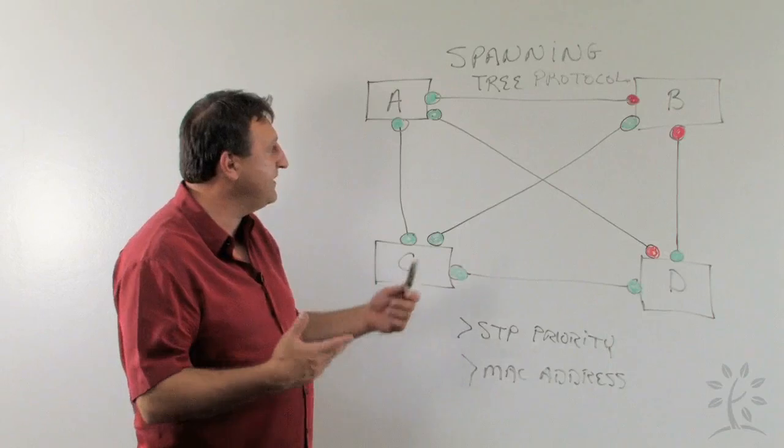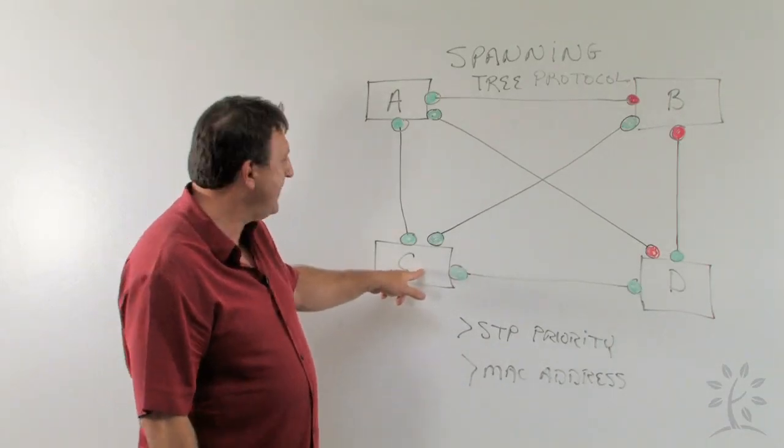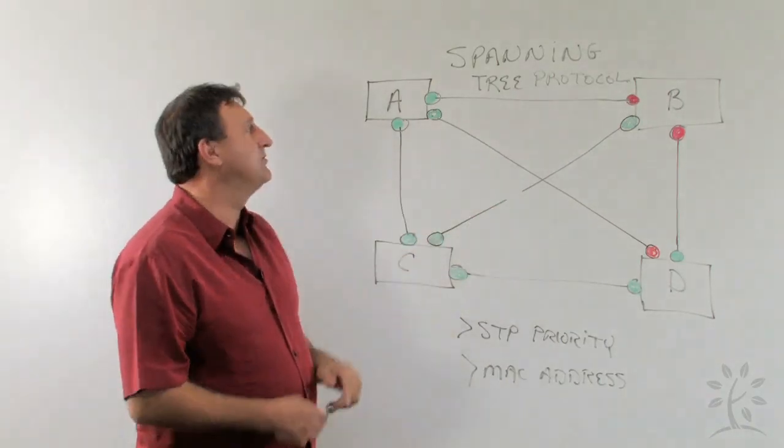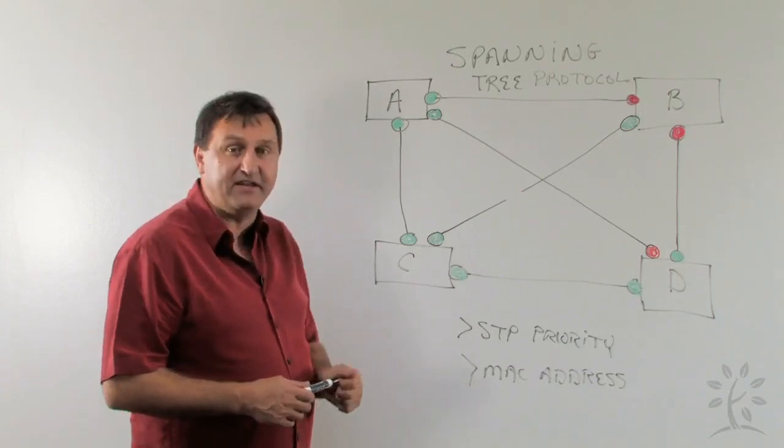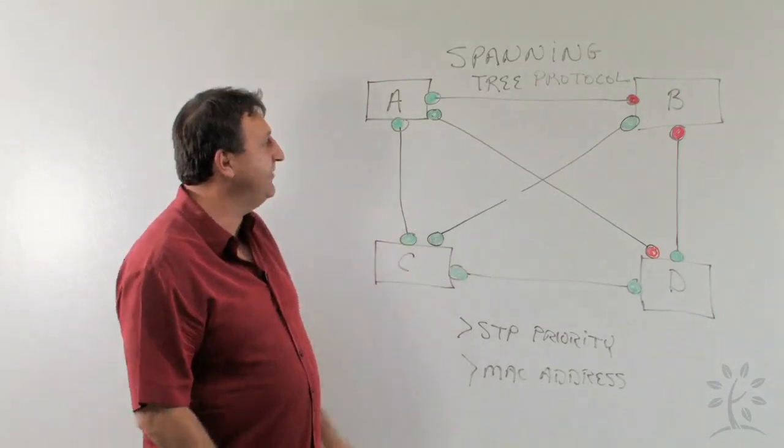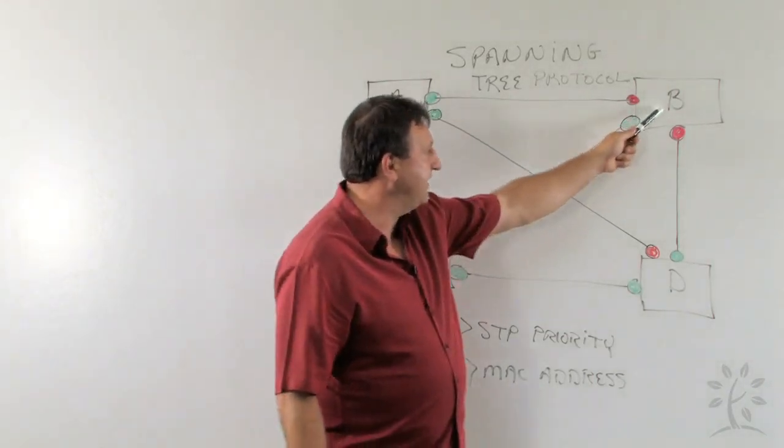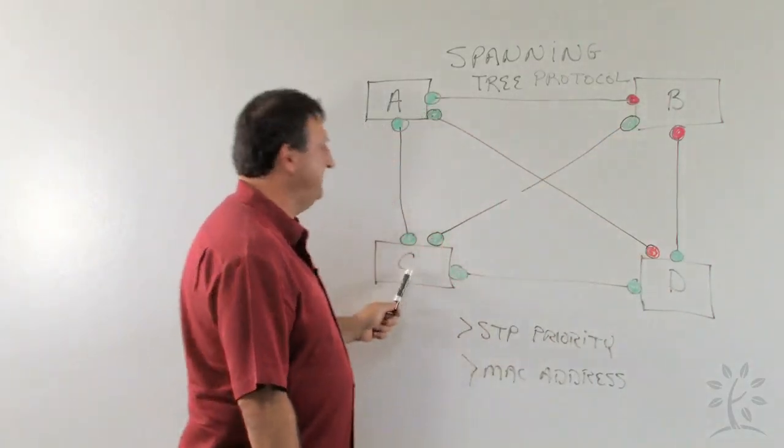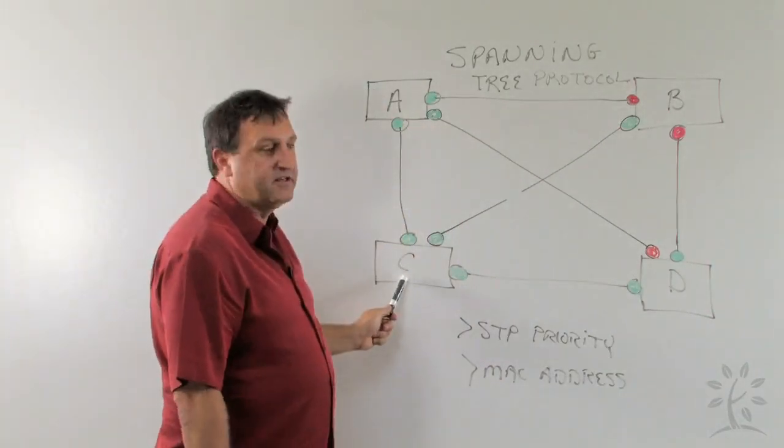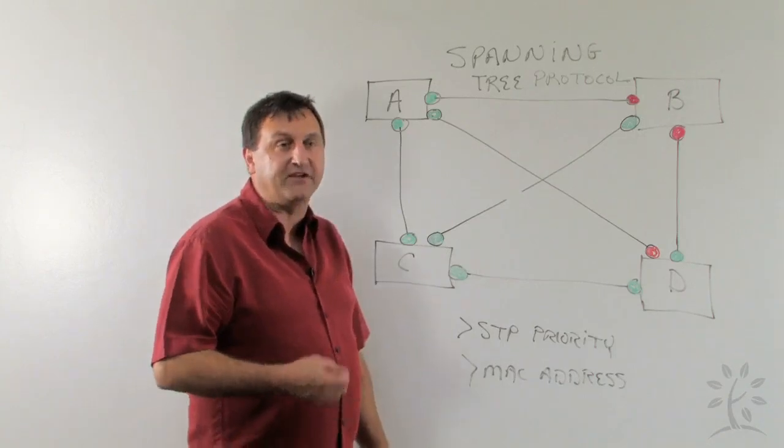So what if we go in and we make a disconnection? Right now, switch C is the root switch. Well, what happens if we go in and we disconnect this cable? Now, switch B no longer has a direct connection to switch C, but it needs to connect to switch C because it's the root. Well, you will see this network will automatically heal itself. Spanning tree election will occur again, and switch B will now either take a path between B to D and to C, or from B to A and down to C.